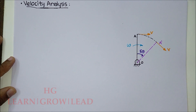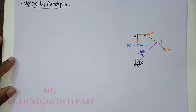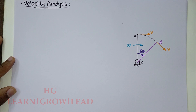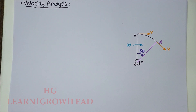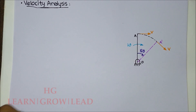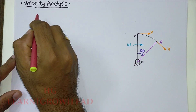First of all, we need a mechanism drawn to proper scale. The configuration diagram, line diagram, and skeleton diagram are very important. The scale must match the problem parameters. This is the relative velocity method approach.